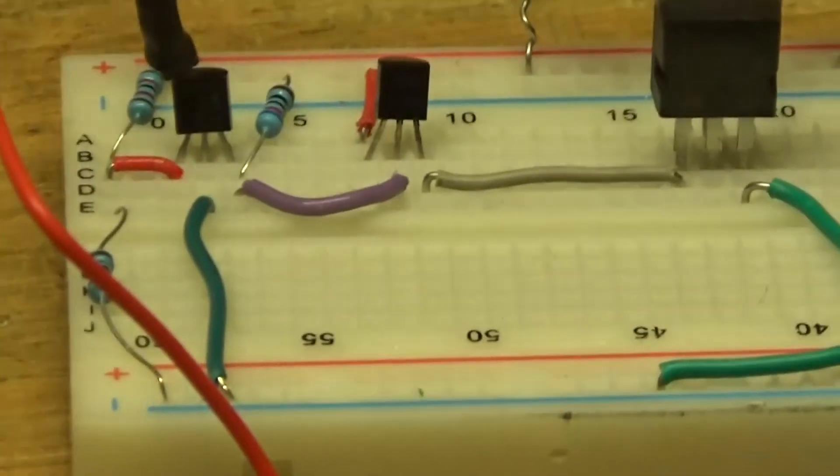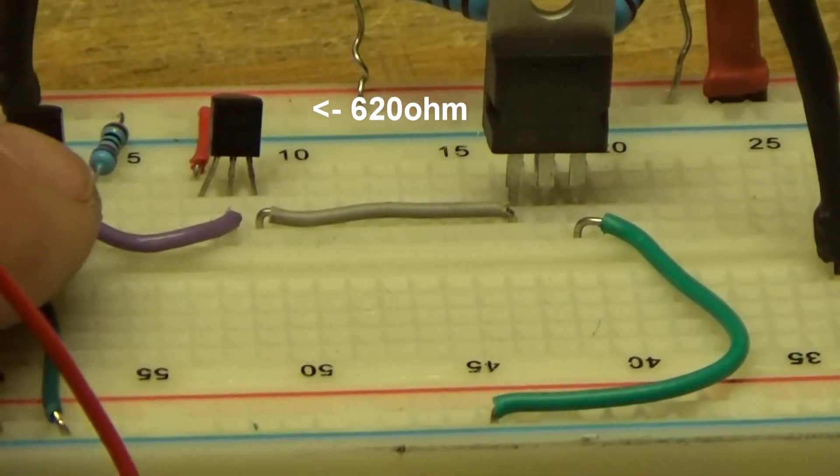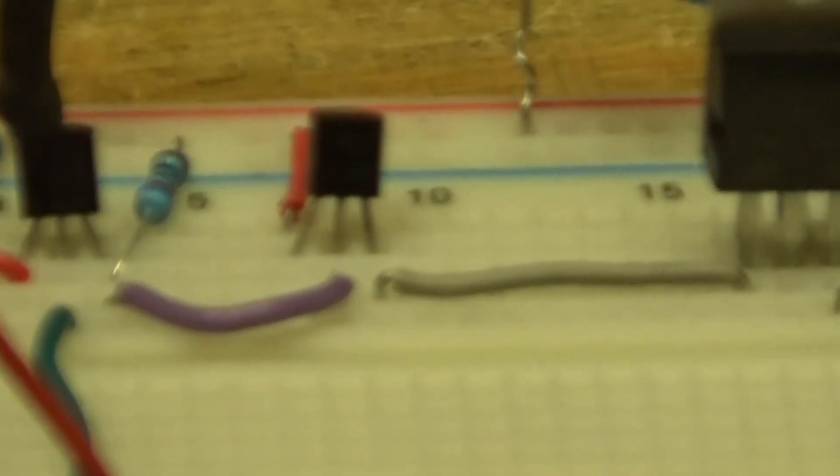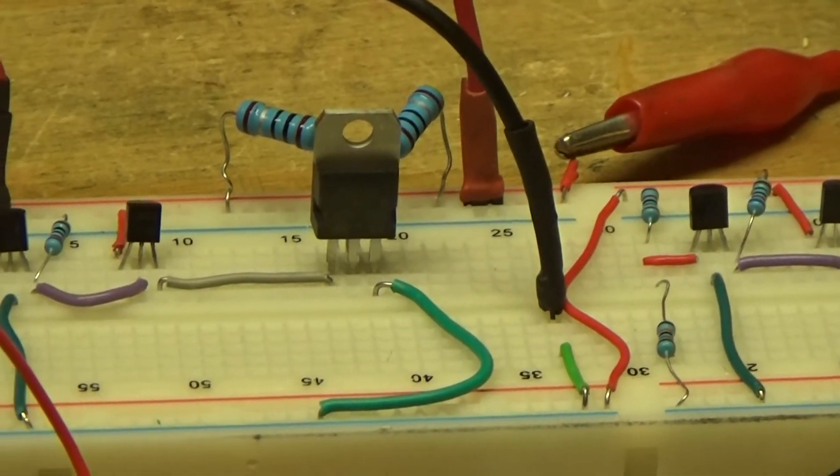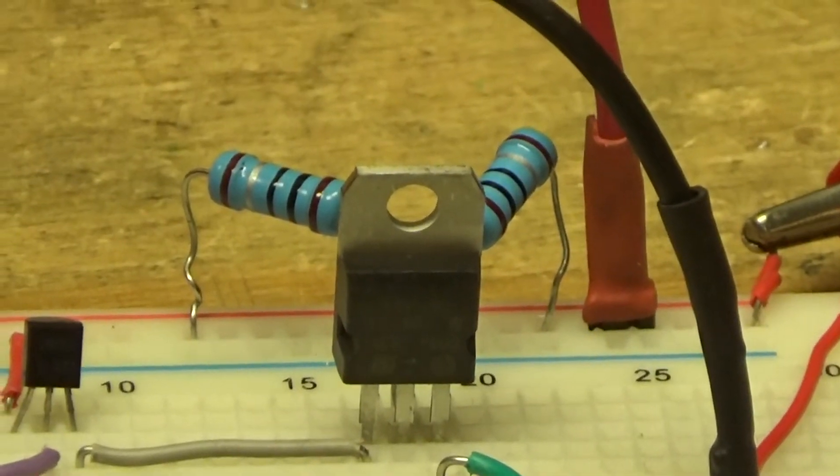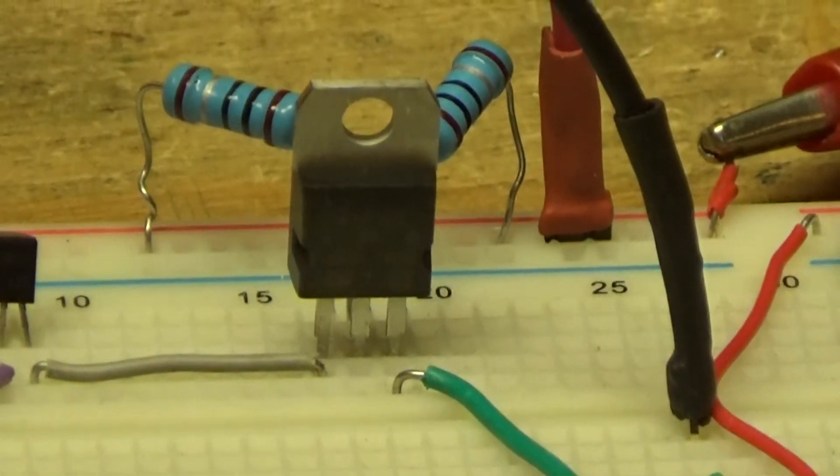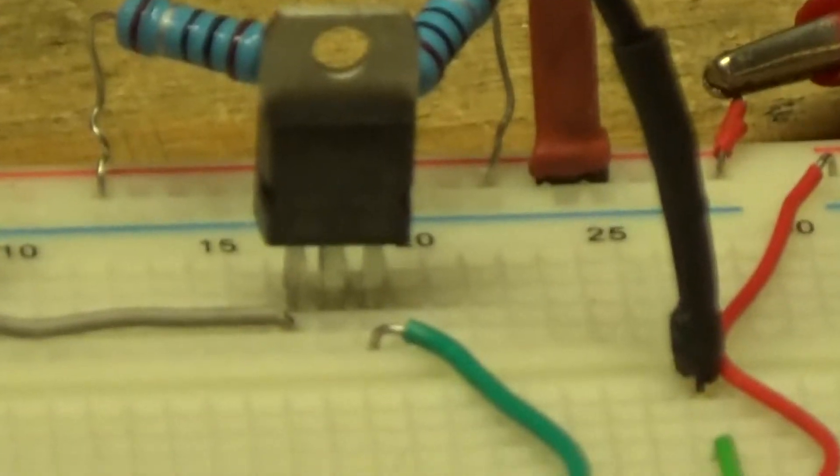Then we have a 680 ohm resistor which is right there, and then we have a PNP transistor here used as a switch which is going to send current and turn this TIP120 transistor on. We have two one-watt resistors of one ohm in parallel, which gives about 0.5 ohms of resistance.